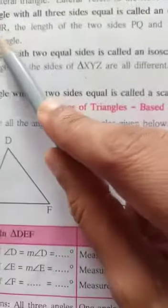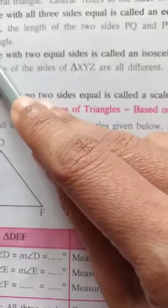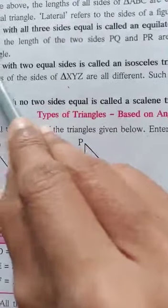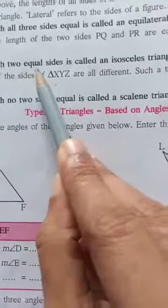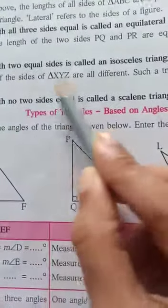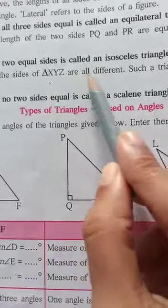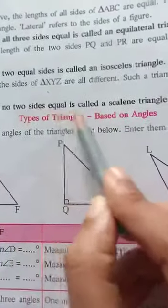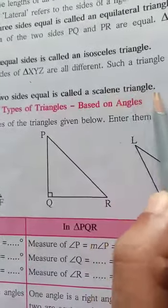In the above three, which is the equilateral triangle? Triangle ABC. Now in triangle PQR, the length of two sides PQ and PR are equal. Such a triangle is known as an isosceles triangle — a triangle with two equal sides is called an isosceles triangle. Next, the length of the sides of triangle XYZ are all different. Such a triangle is called a scalene triangle — a triangle with no two sides equal is called a scalene triangle.